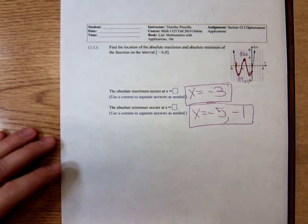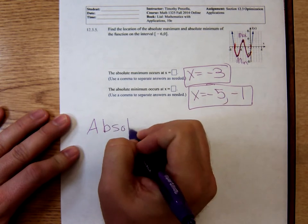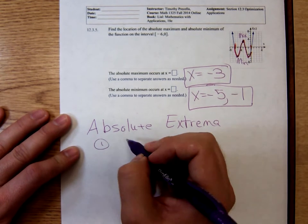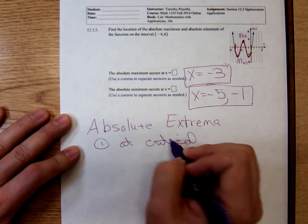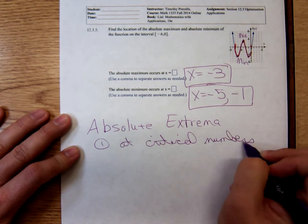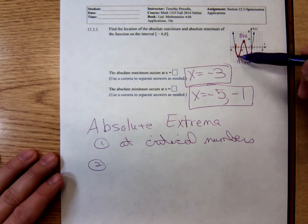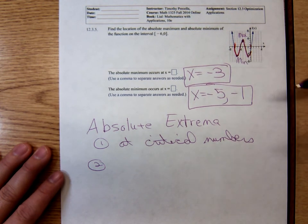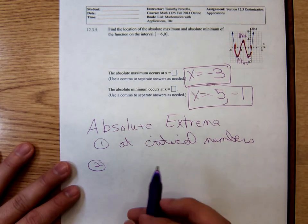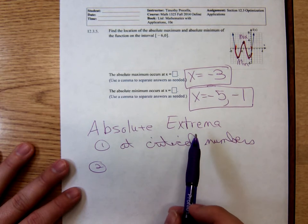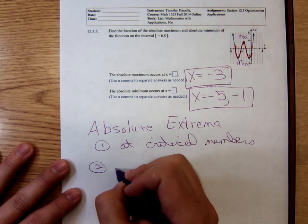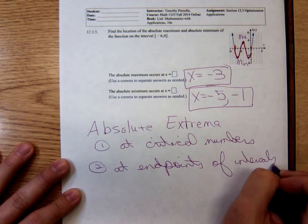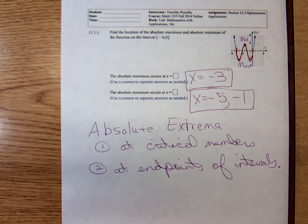To summarize: absolute extrema on a closed interval can occur at critical numbers — that's where we had the absolute minimum and maximum values in both examples — or at the endpoints of the interval. The absolute maximum occurs at critical numbers or at the endpoints of closed intervals. Thanks for watching, bye!